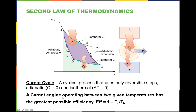A Carnot engine operating between two given temperatures has the greatest possible efficiency. Its efficiency is equal to one minus the temperature of the cold side divided by the temperature of the hot side. Engines that actually approximate Carnot engines at greater than 70% efficiency have not been described.